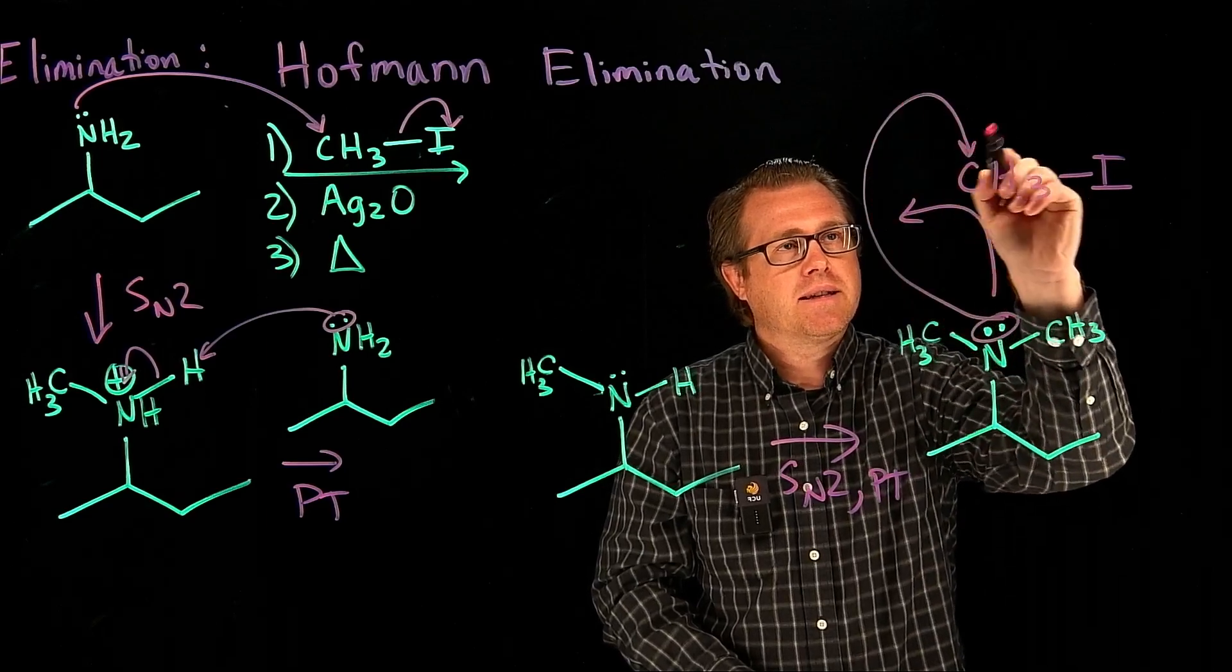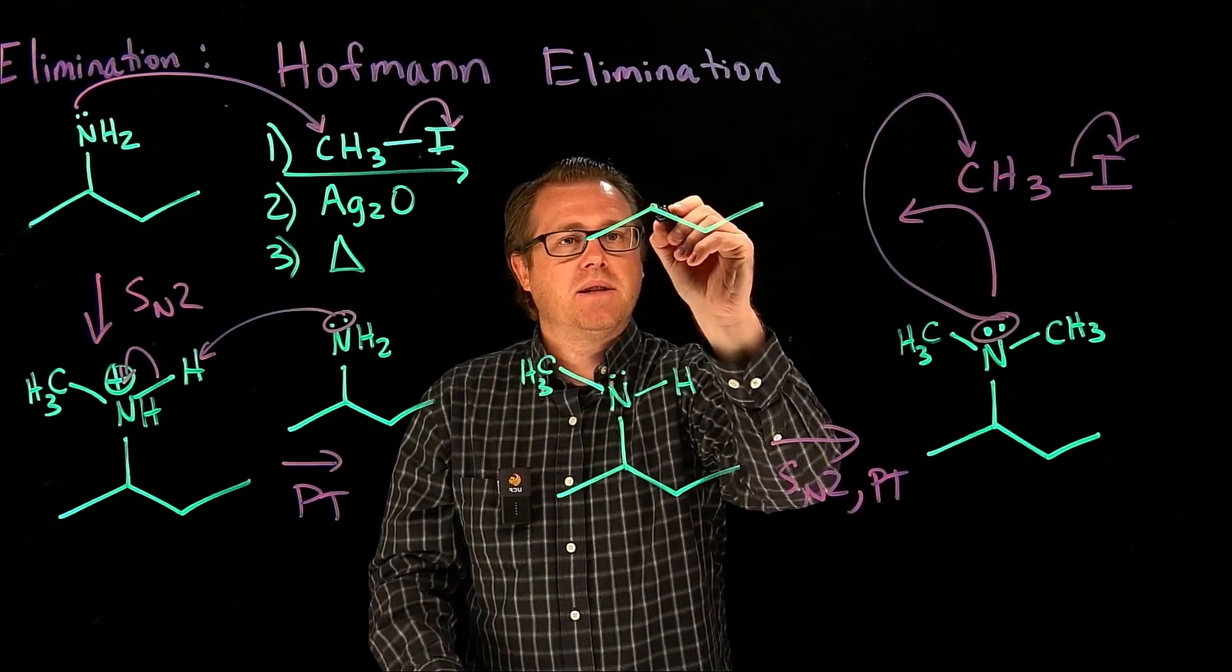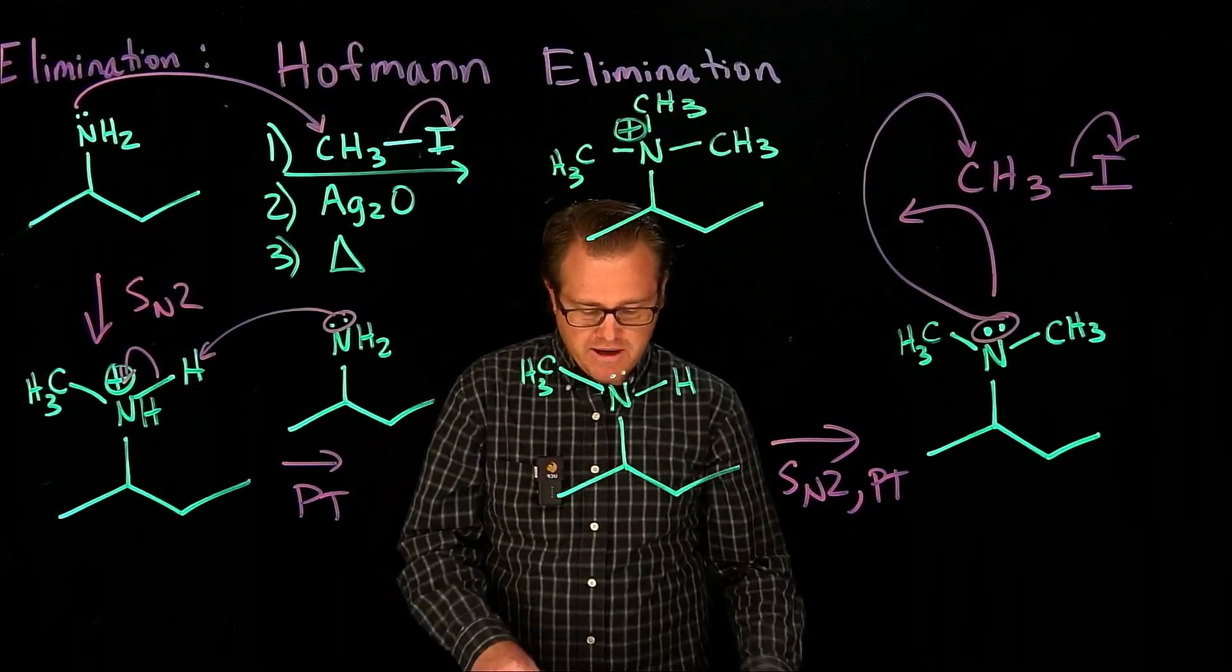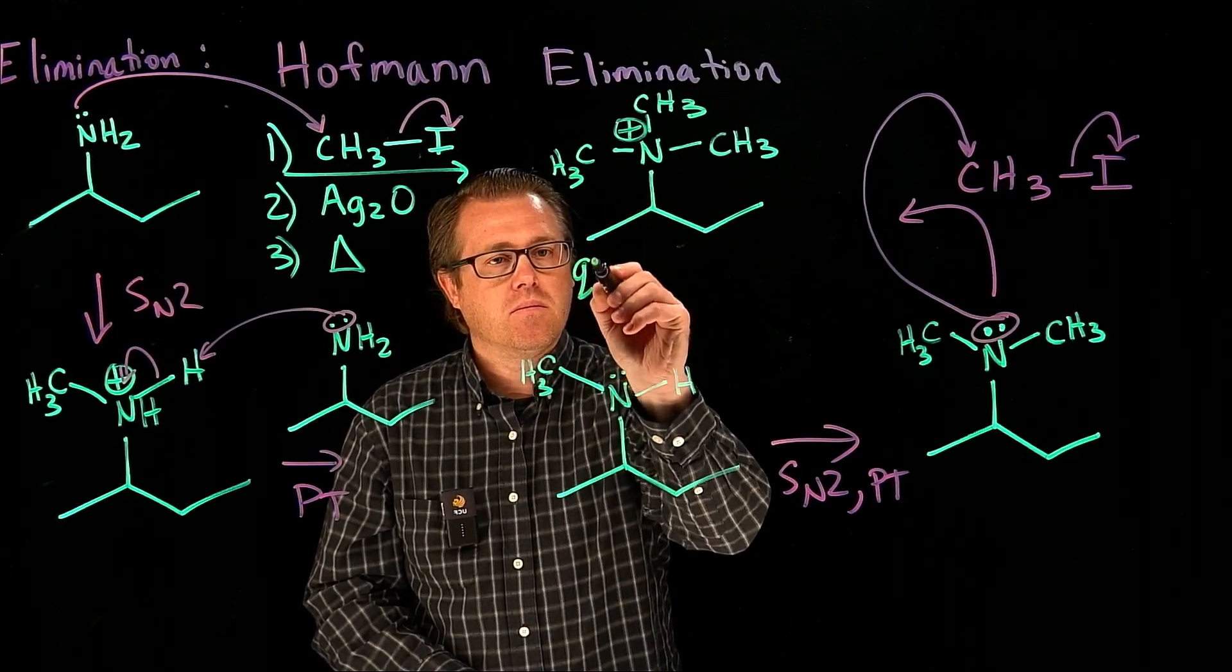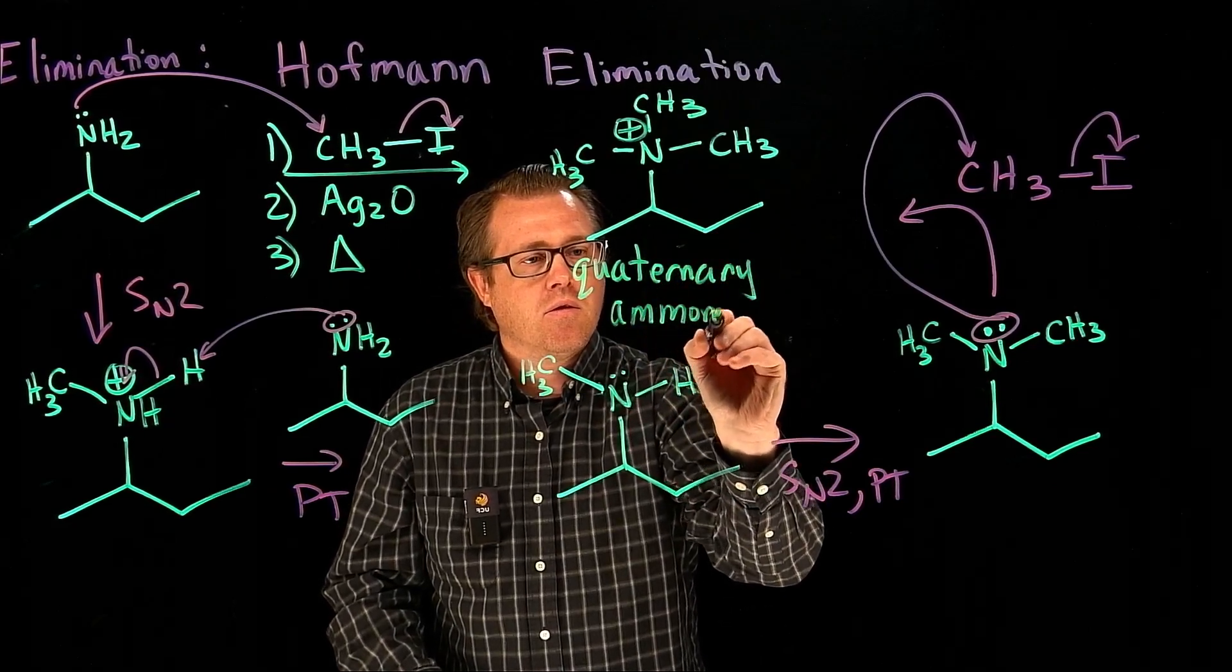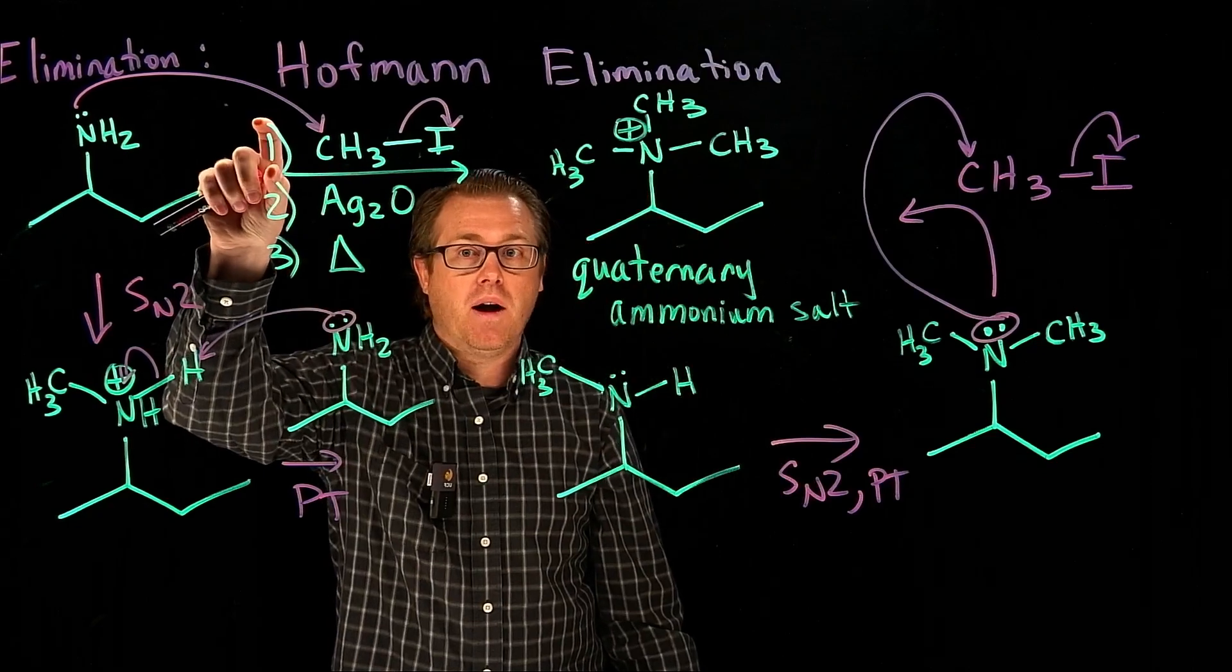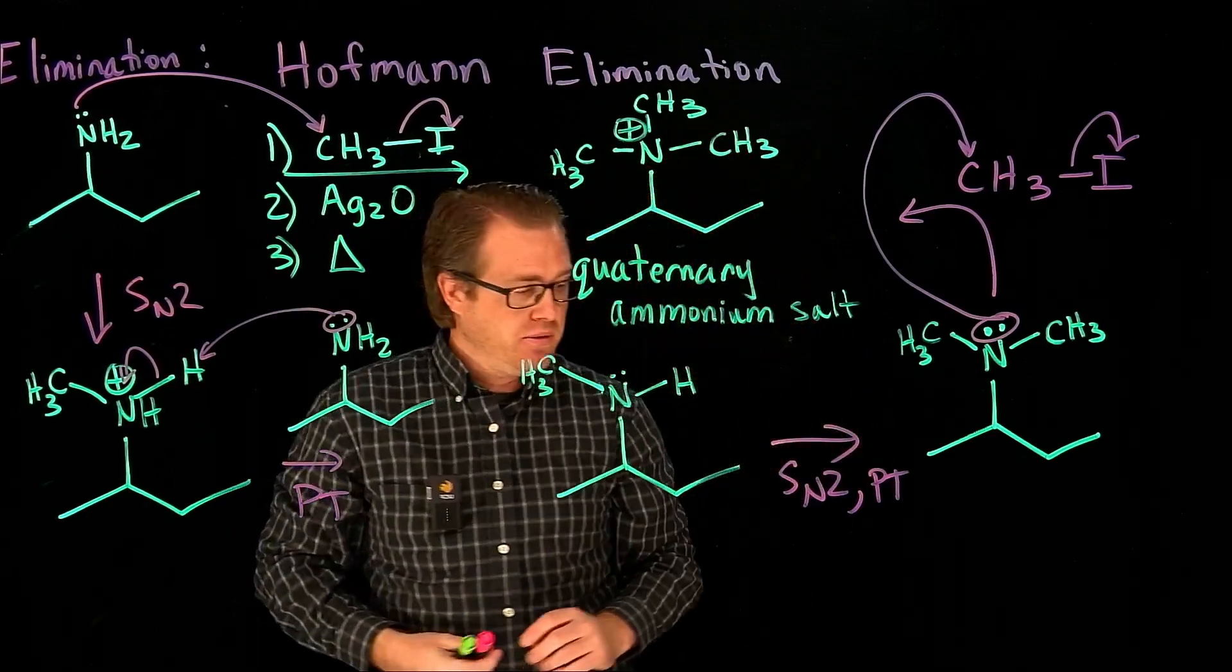The lone pair comes in, attacks the methyl iodide, and that's going to give us this species. What have we just generated? We have generated a quaternary ammonium salt. That's the end product of step one. Now I'm going to clean out this board and take this species and treat it with step two.